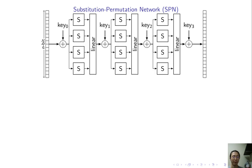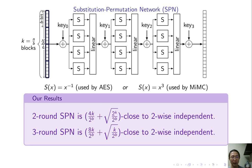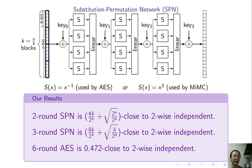This is our result for KAC. For SPN, say there are K blocks, each has B bits. We consider the S-box being inverse, which is used by AES, or cube, which is used by Mimic. For these S-boxes, we show 2 round SPN is close to 2-wise independence, and 3 round SPN is even closer to 2-wise independence. We also show 6 round AES, the actual 6 round, there is no idealization at all. It's 0.472 close to 2-wise independence.